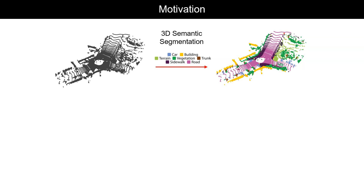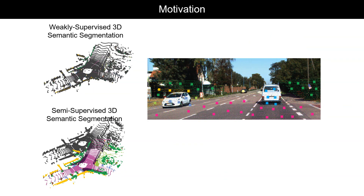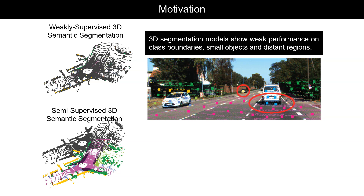Due to the expensive and tedious nature of large-scale point cloud labeling, many recent works have switched focus to data-efficient settings, such as weakly and semi-supervised 3D semantic segmentation. However, 3D segmentation models trained under such settings show weak performance on class boundaries, small objects, and distant regions. These errors are severely reduced when operating on a denser representation of a scene, such as with commonly paired camera images.